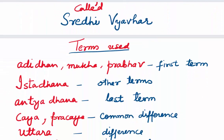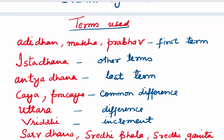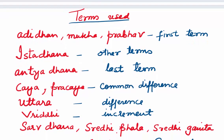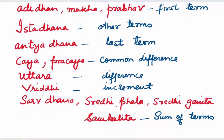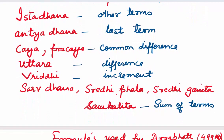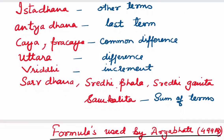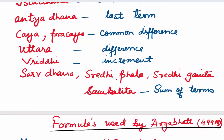What were the terms used by them? 'Adidhan', 'Mukh', or 'Prabhav' were words used for the first term; 'Ishtadhan' for other terms; 'Antyadhan' for the last term; 'Chai' or 'Prachai' for common difference; 'Utra' for difference; 'Vridhi' for increment; and 'Sarvadhan', 'Shriddhi Fal', 'Shriddhi Ganita', 'Kalita' — all were used for sum of terms.